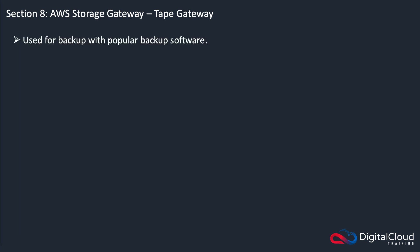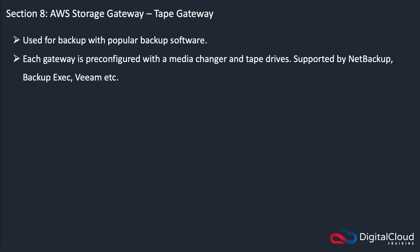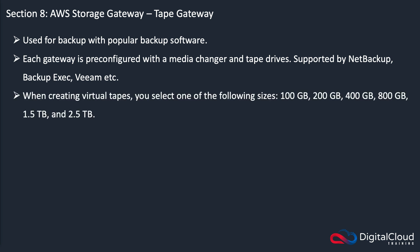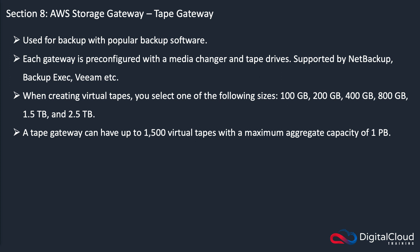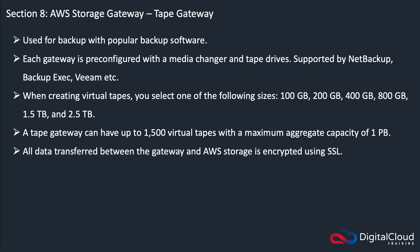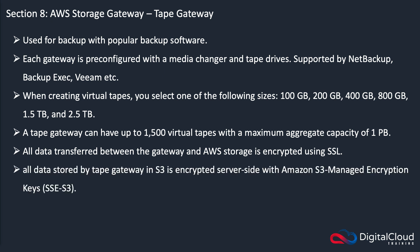Tape Gateway is used with popular backup software. Each gateway is pre-configured with a media changer and tape drives, supported by NetBackup, Backup Exec, Veeam, and others. You can select from different tape sizes; it can have up to 1,500 virtual tapes and a maximum aggregate capacity of one petabyte. All data transfer between the gateway and AWS is encrypted using SSL, and all data stored by the gateway in S3 is encrypted server-side with Amazon S3 managed encryption keys (SSE-S3). These encryption points apply to all gateway types.